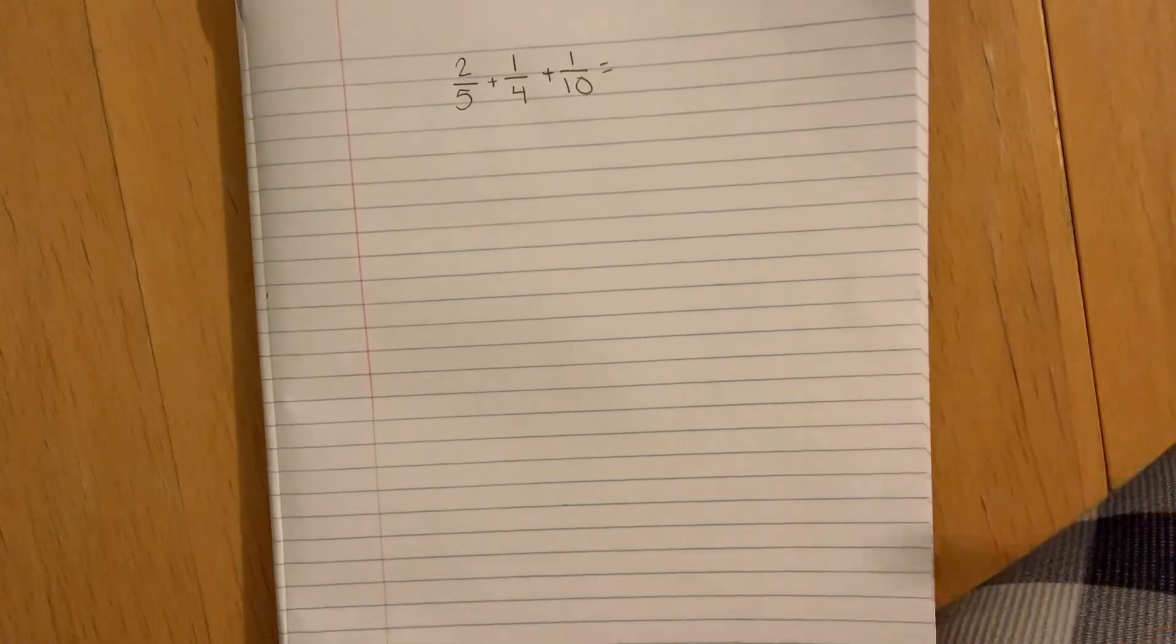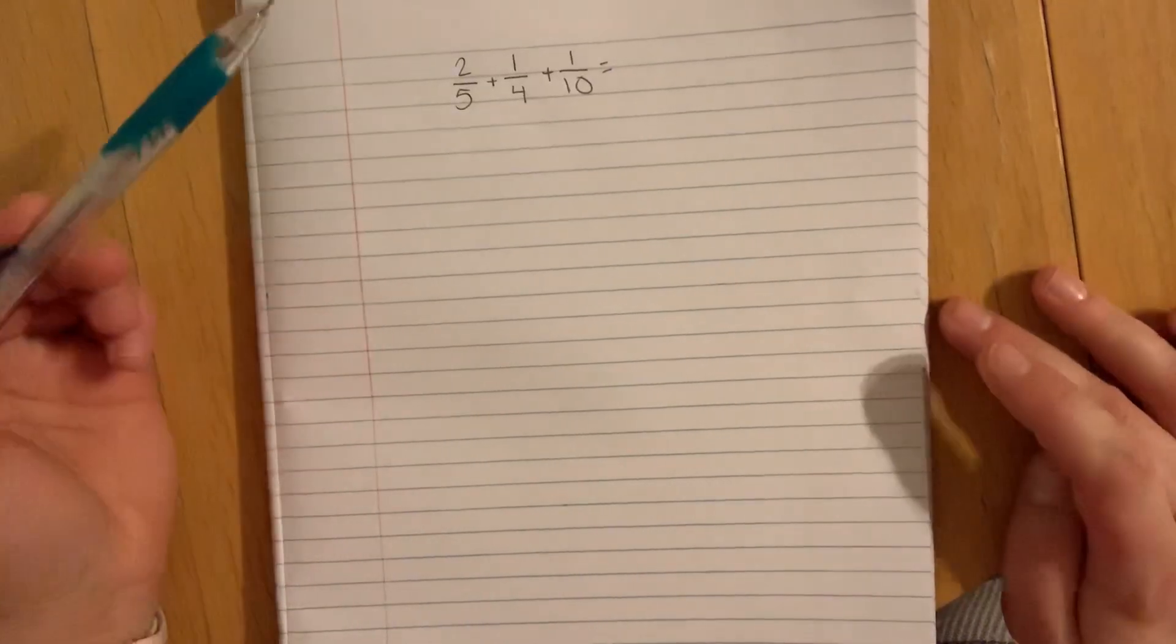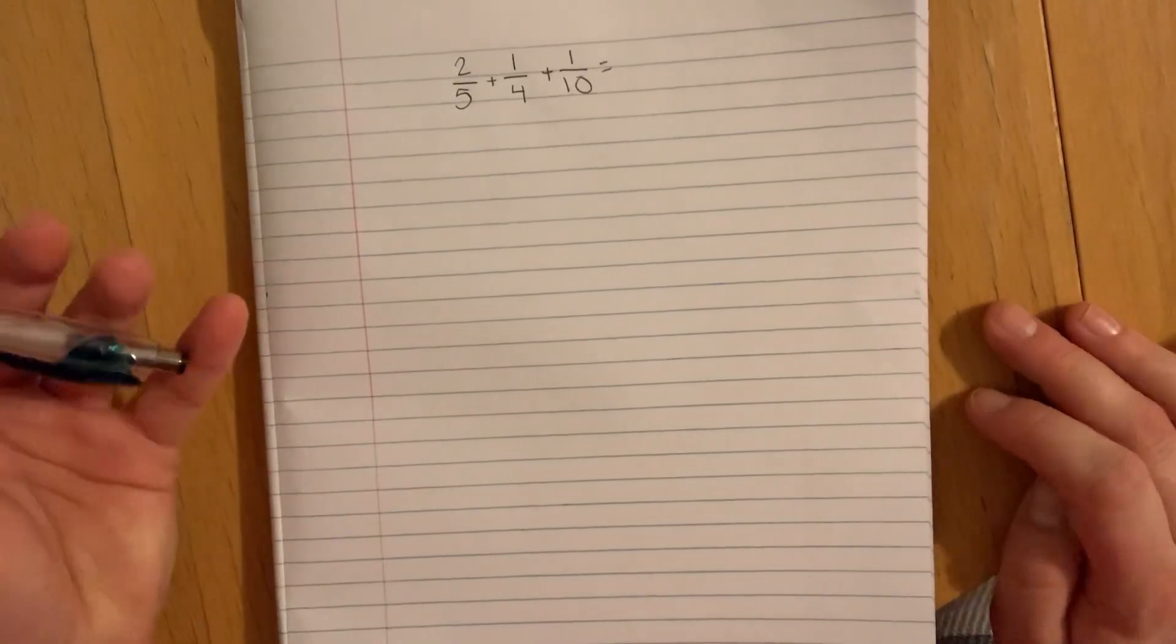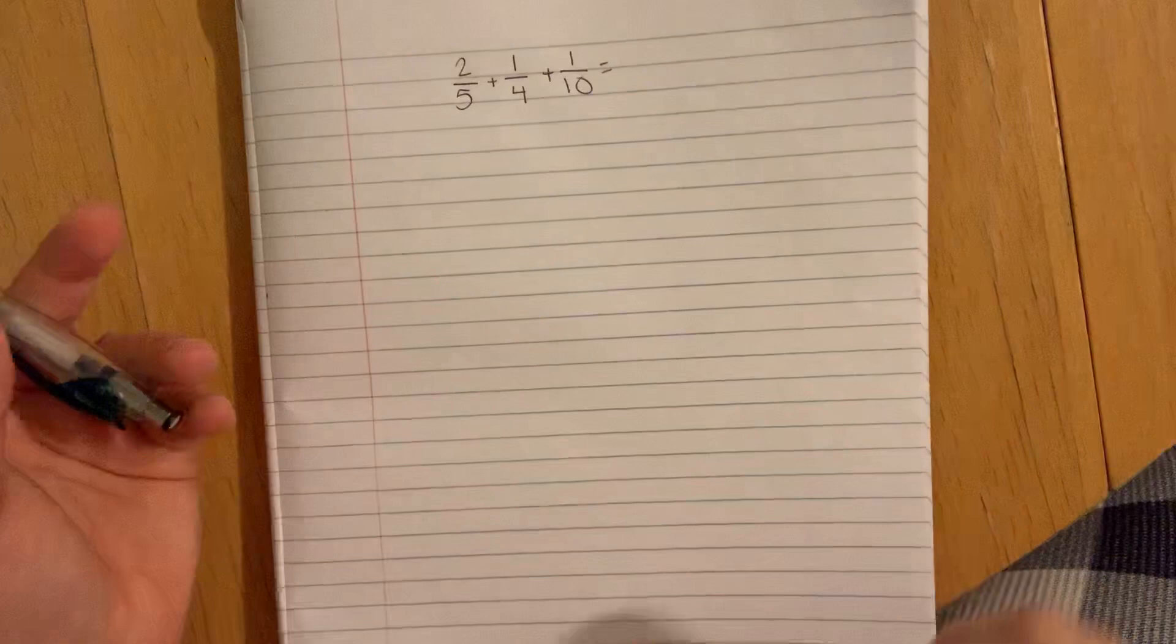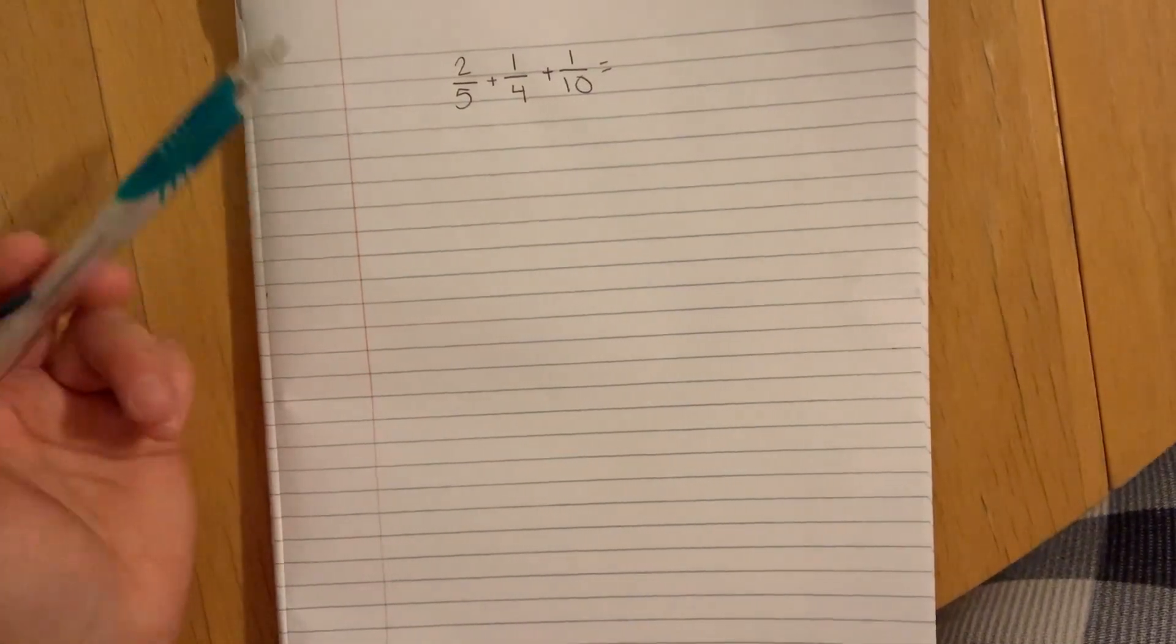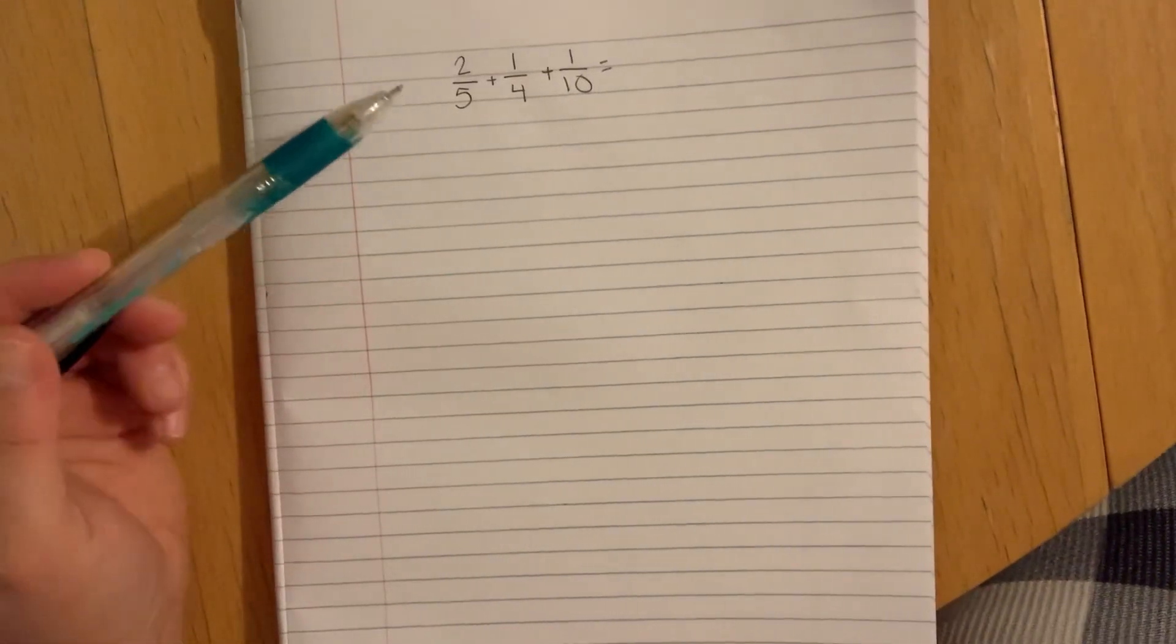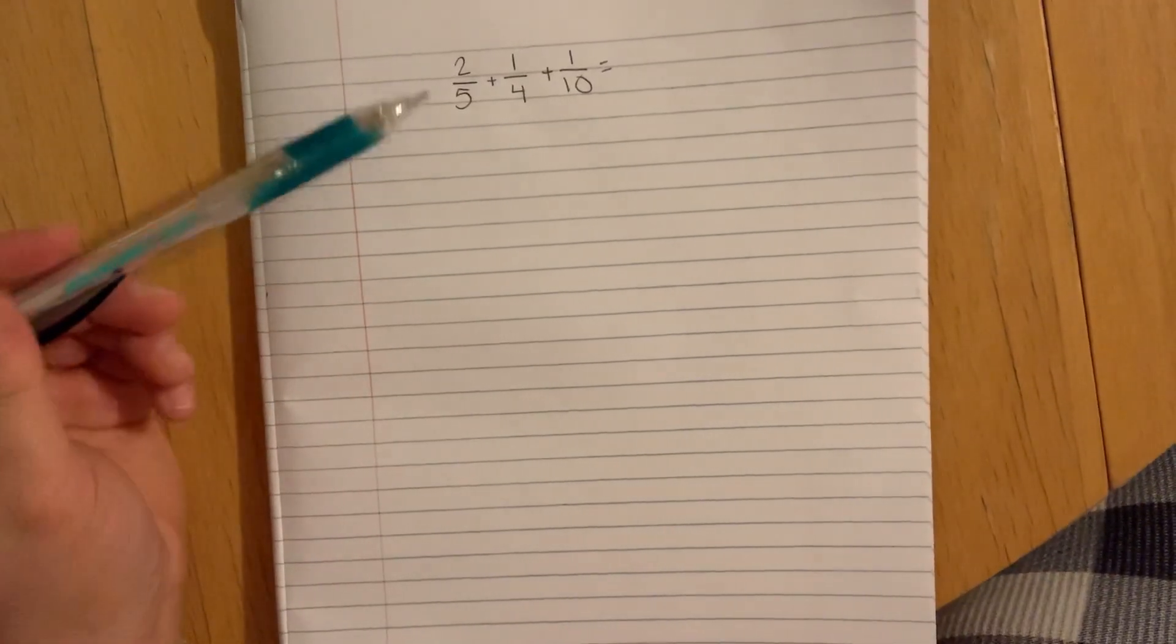They need to have equal pieces that you're going to combine. We used to make pictures, but when you have three addends you can't do pictures anymore. This is a more efficient way, so we have to see how to make these denominators the same.